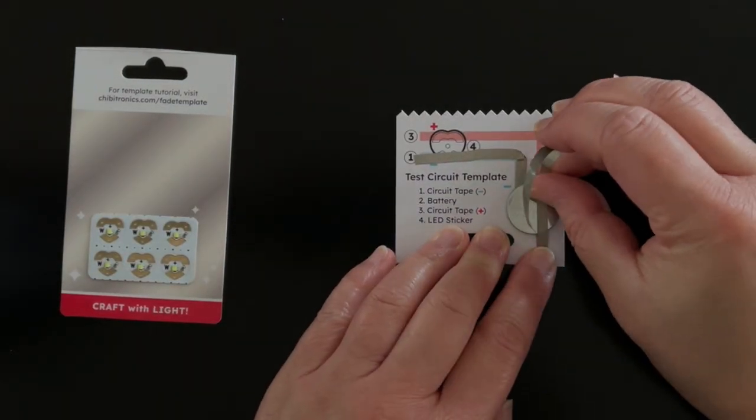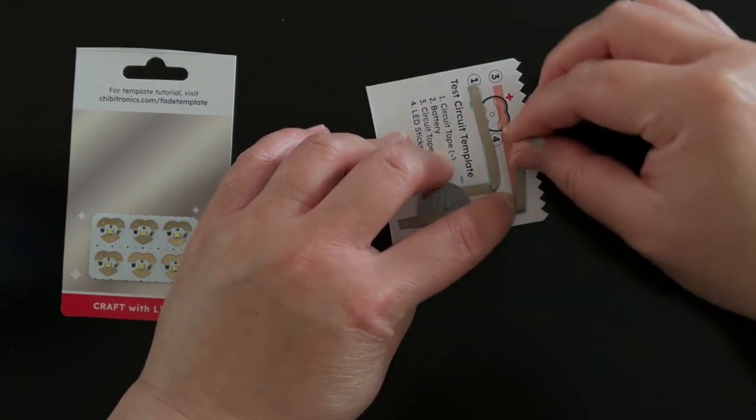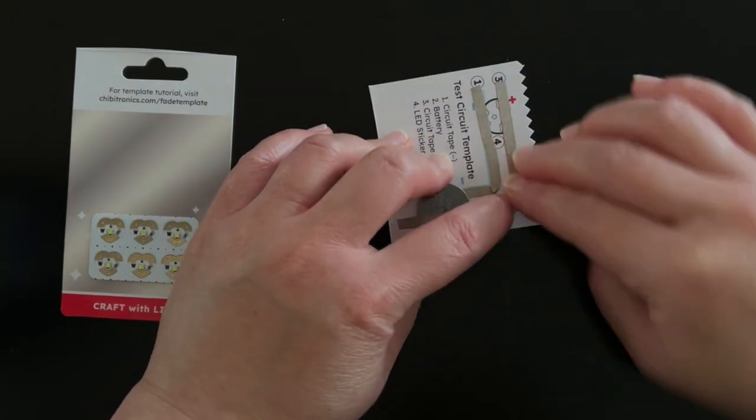Add another piece of tape along the red positive line. This piece of tape will cross the top positive side of your battery and also help to hold it in place.